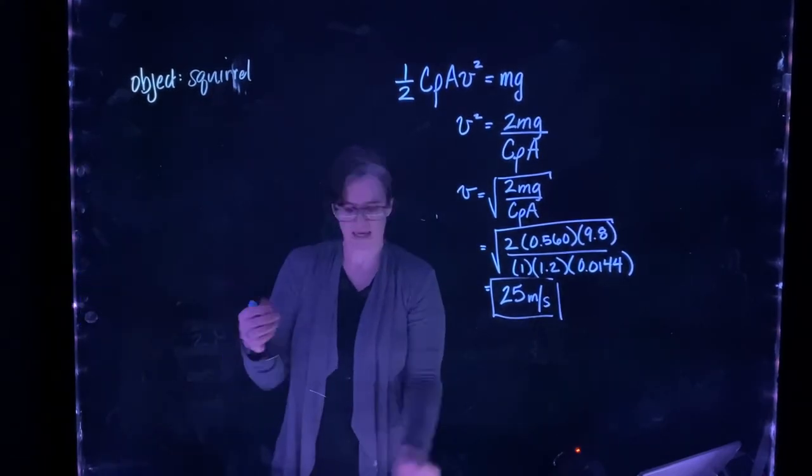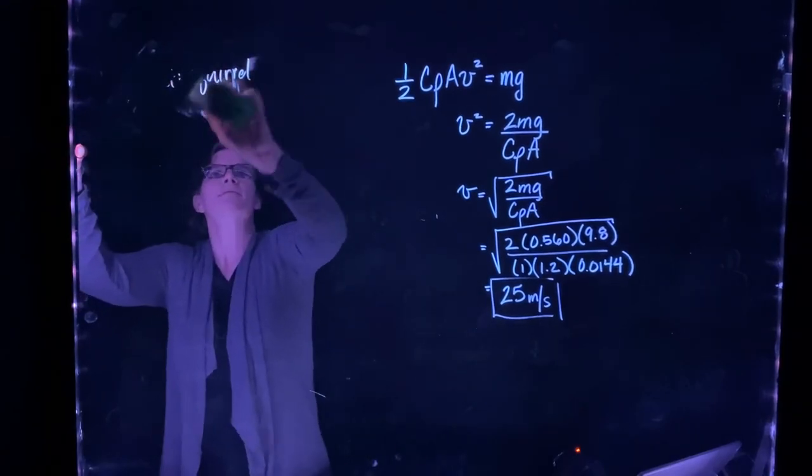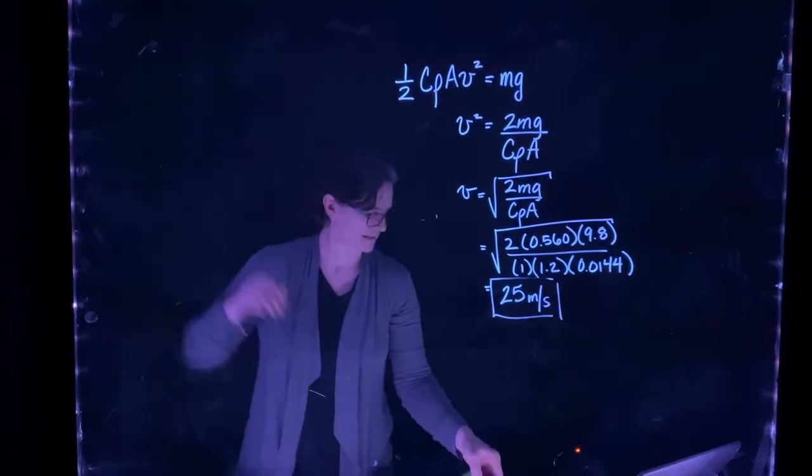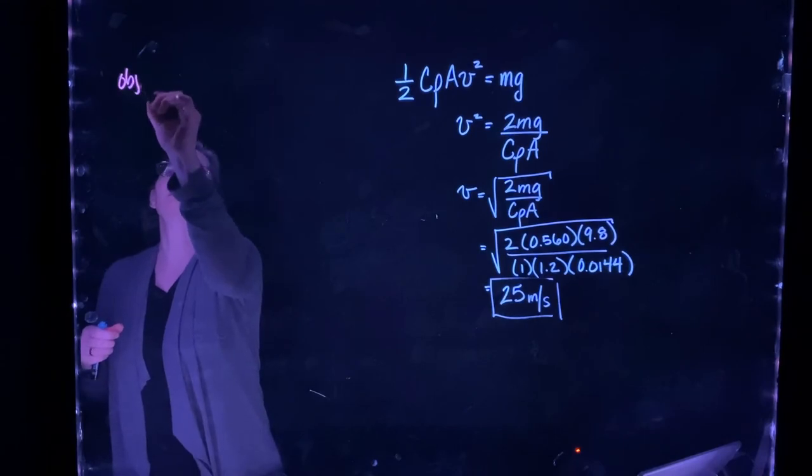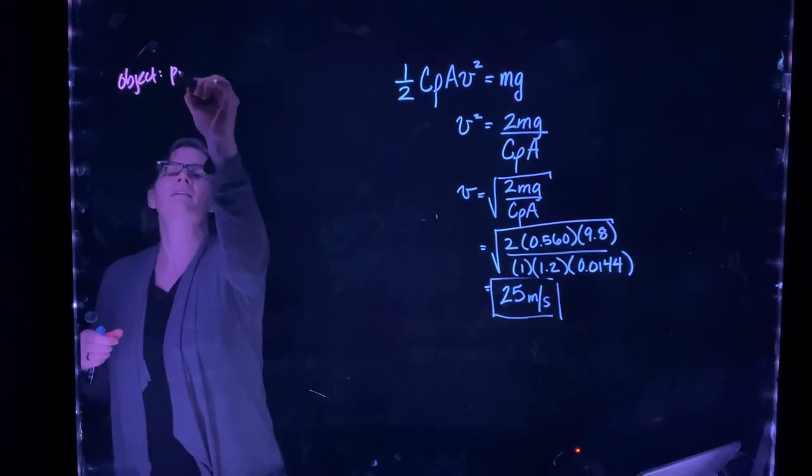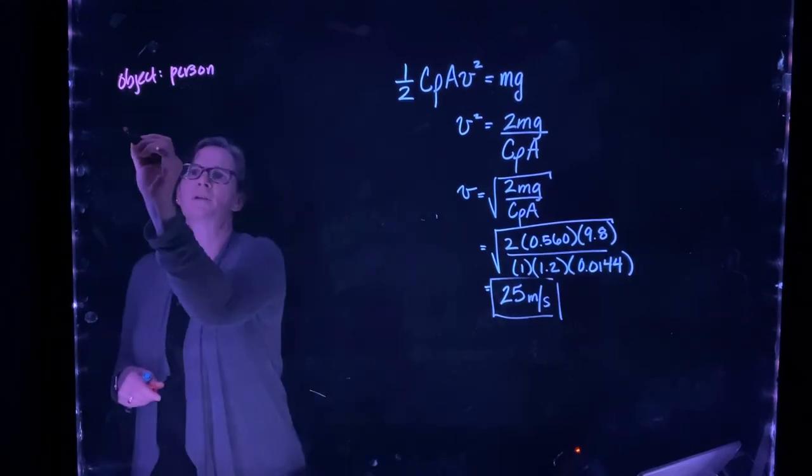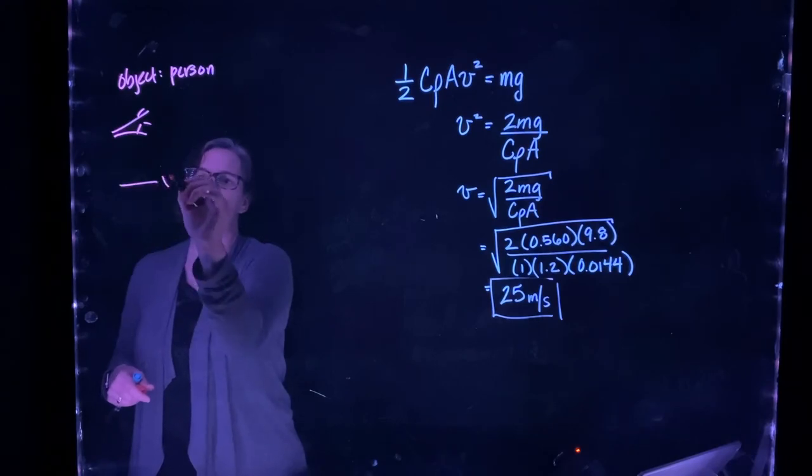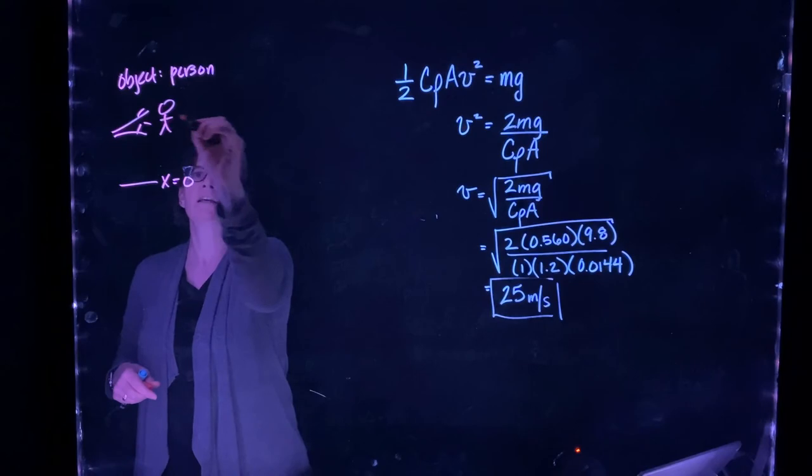Now let's compare this to a person falling out of that tree. In this case, our object is the person. I believe it says a man is jumping down that tree.